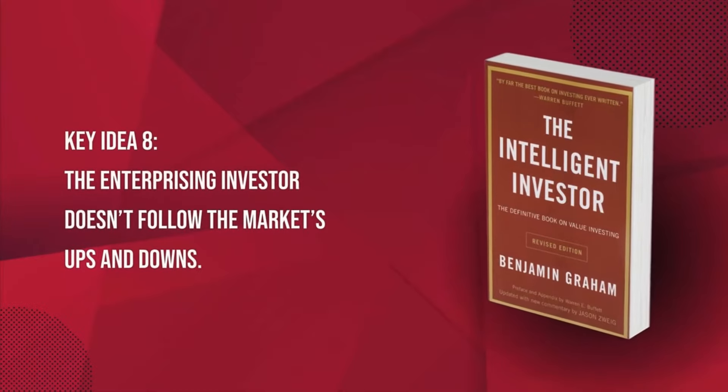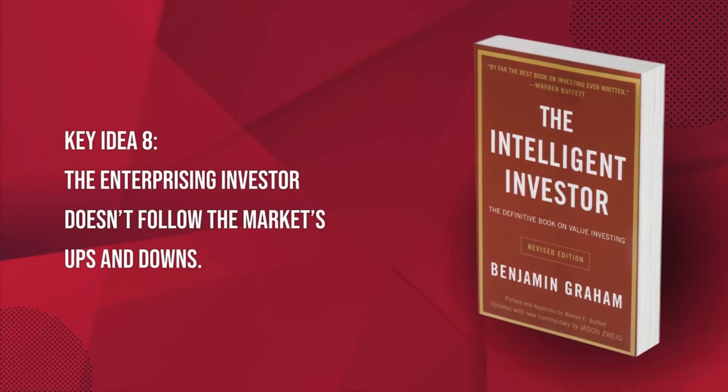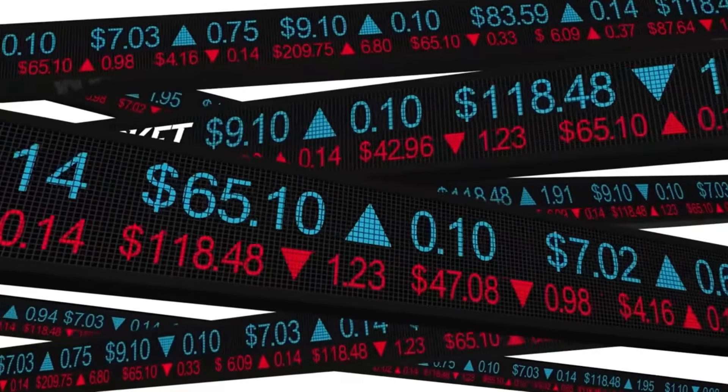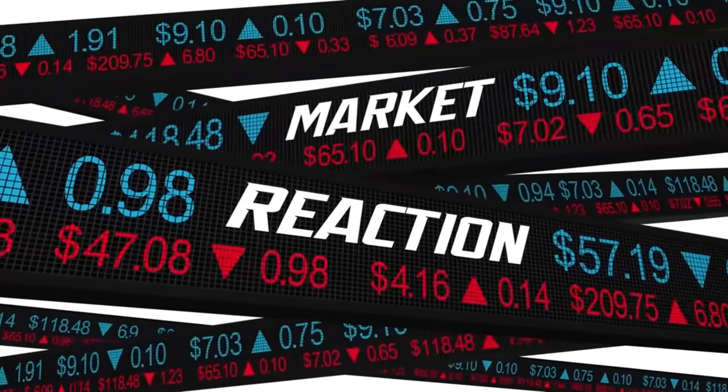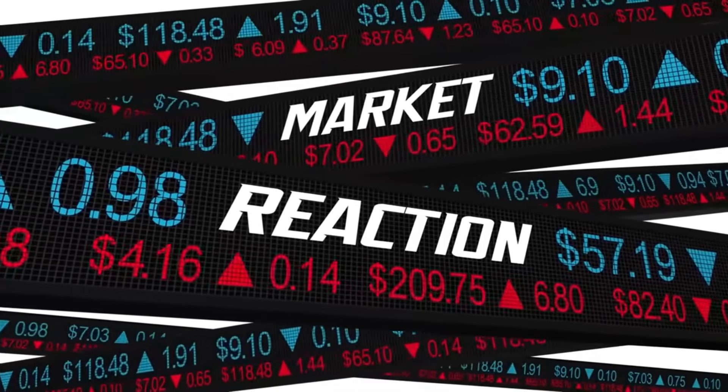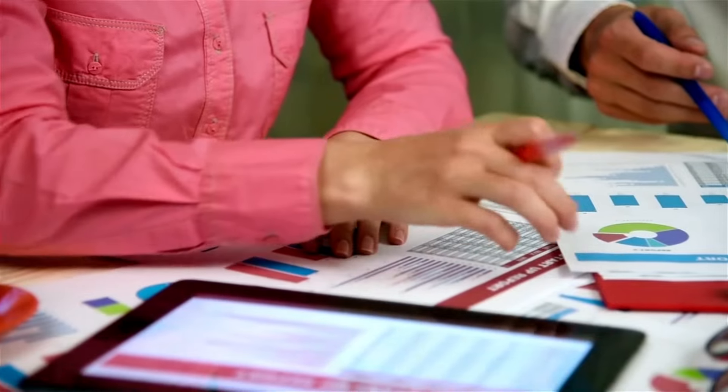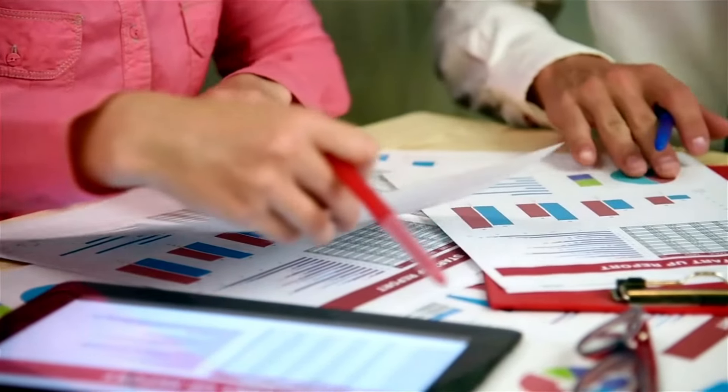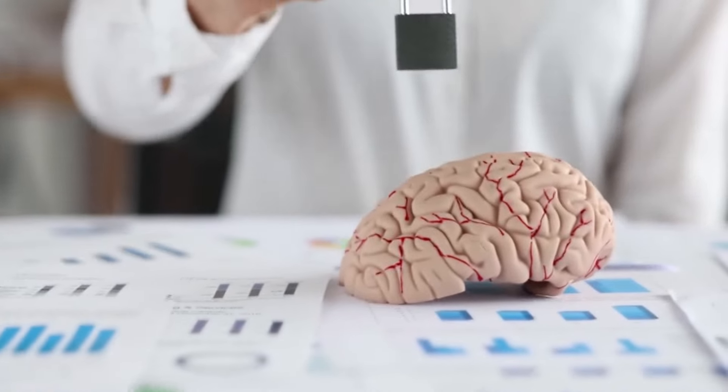Key idea 8: The enterprising investor doesn't follow the market's ups and downs. If you own stocks and their price falls, do you sell them immediately or keep them? If another stock is rising, is it a good idea to get in on the action before it's too late? This approach, known as trading in the market, is typical of investors because they fear that going against the flow will result in financial losses. An intelligent investor, however, knows better. Trusting Mr. Market is dangerous.